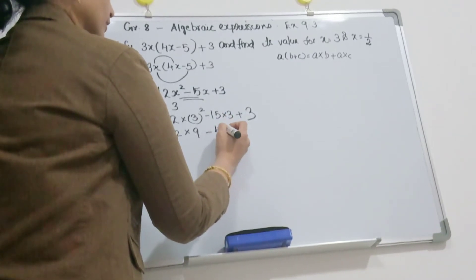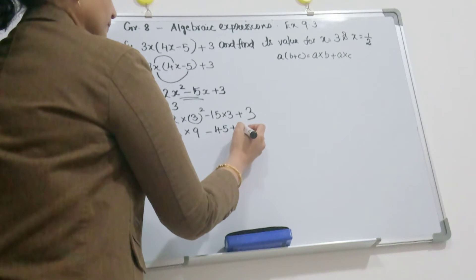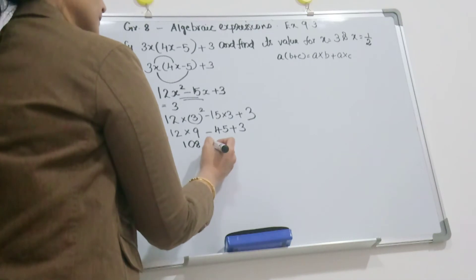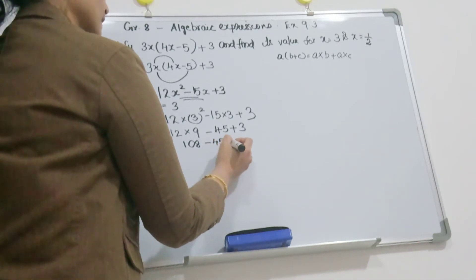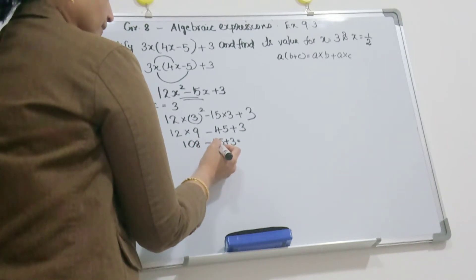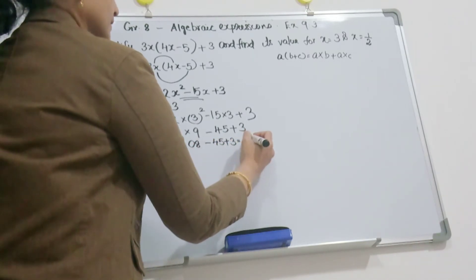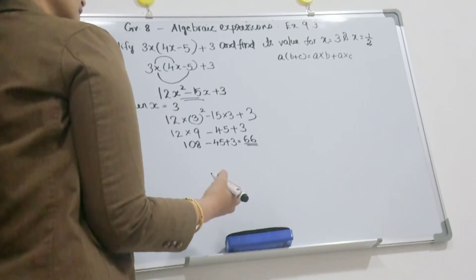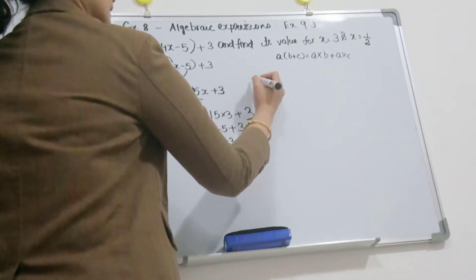12 into 3 square is 9, so 12 into 9 is 108 minus 15 into 3 is 45 plus 3. This is equal to 108 minus 45 is 63, 63 plus 3 is 66. This is the answer.